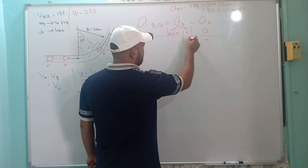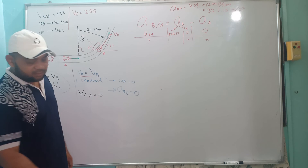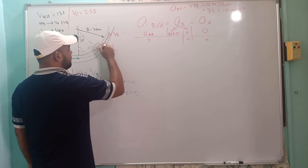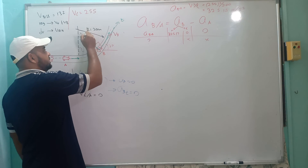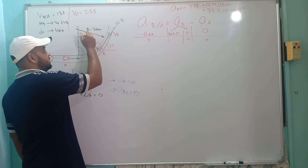Since AA is zero (no direction, no magnitude), A_BA equals AB normal. We construct the normal-tangent axis: tangent is in the same direction as velocity (at 30° from the geometry), and normal points toward the center of rotation. The angle here is 60 degrees. Therefore A_BA = AB normal = 32.513 m/s² in the direction 60 degrees.